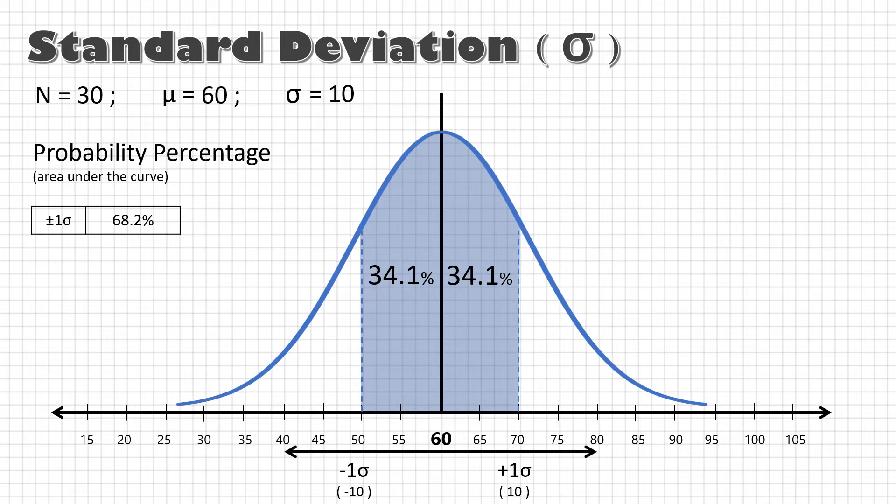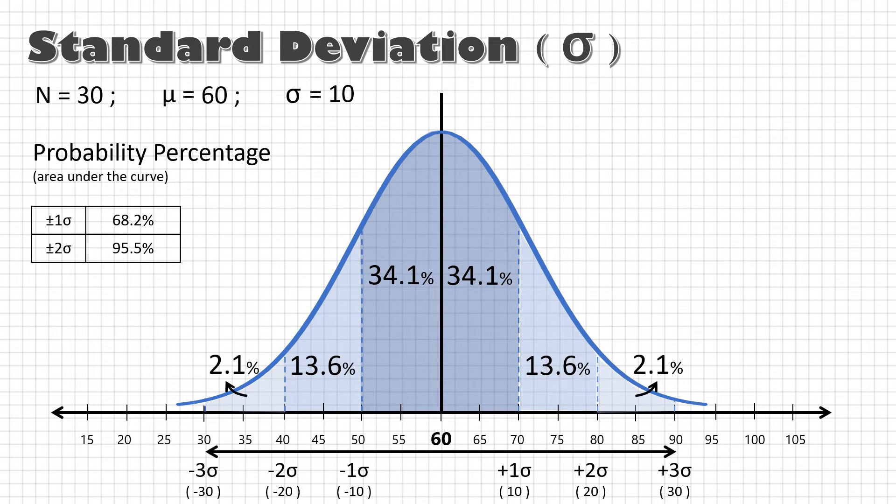In the same way, with plus minus 2 sigma, the total area covered for the parts between 40 and 80 will be 95.5%. And for plus minus 3 sigma, it will become 99.7%. That means, in any normal process, there is a probability that 99.7% of the parts will lie within plus minus 3 sigma range.